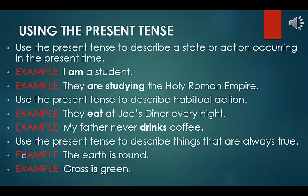Using the present tense. Use the present tense to describe a state or action occurring in the present time. Example: I am a student. Example: they are studying the Holy Roman Empire. Use the present tense to describe habitual action. Example: they eat at Joe's diner every night. Example: my father never drinks coffee. Use the present tense to describe things that are always true. Example: the earth is round. Example: grass is green.